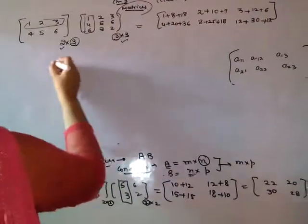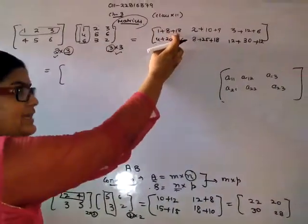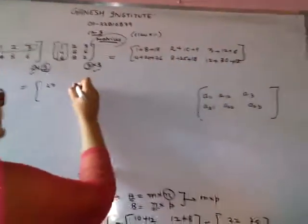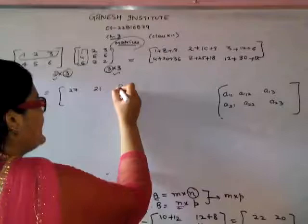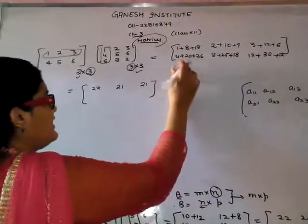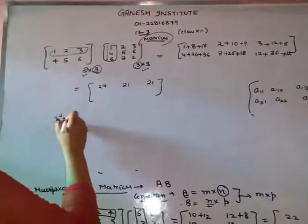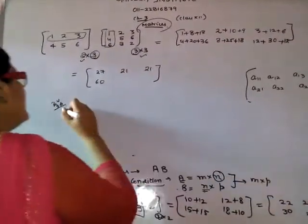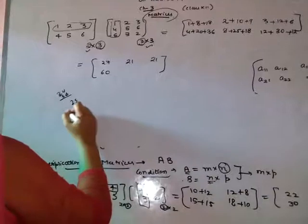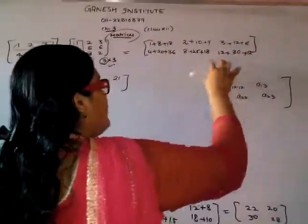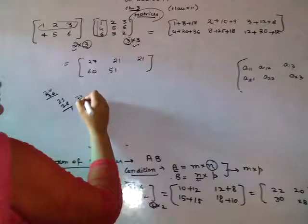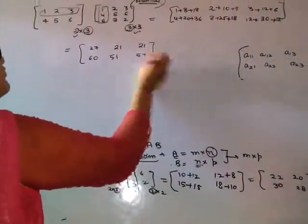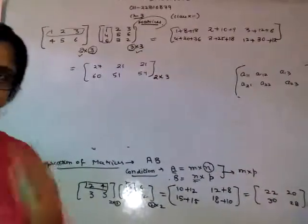So what do we get here is that: 1 plus 8 plus 18 is 27, 2 plus 10 plus 9 is 21, 3 plus 12 plus 6 is 21. 4 plus 20 plus 36 is 60, 8 plus 25 plus 18 is 51, 12 plus 30 plus 12 is 54. This is our answer, a 2 by 3 order matrix.